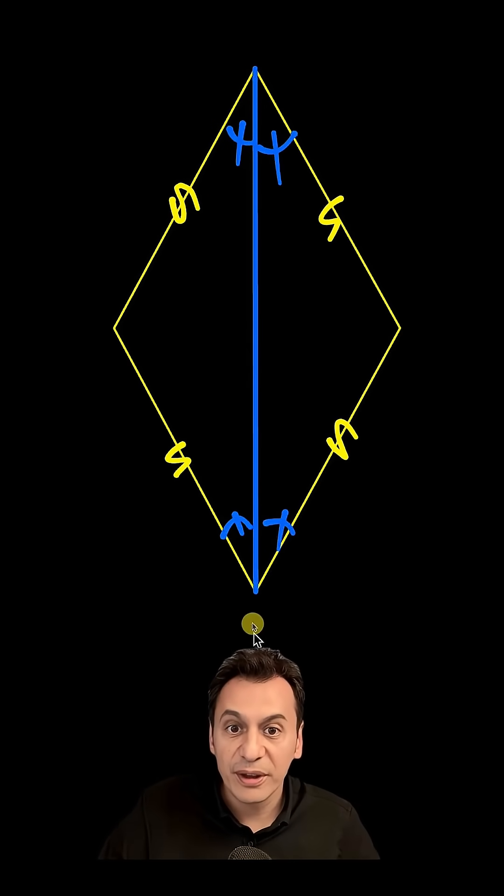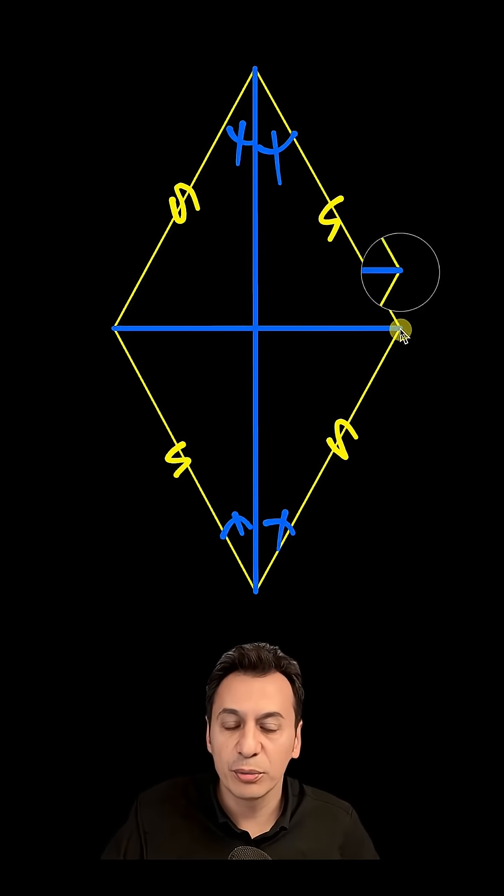Thus, this diagonal also becomes an angle bisector. When I draw this other diagonal as well, the same situation will occur.